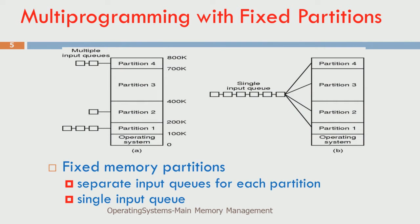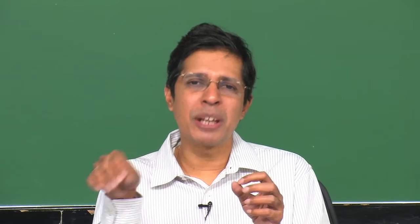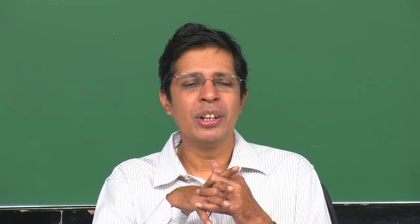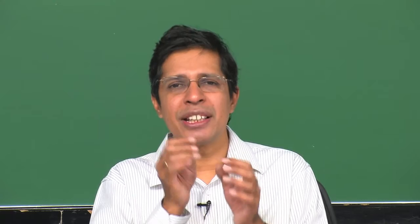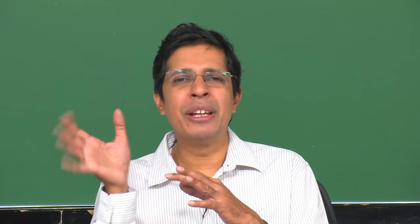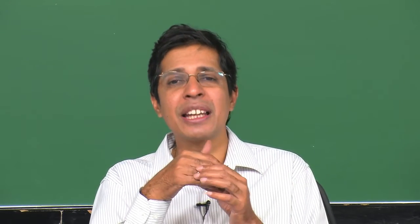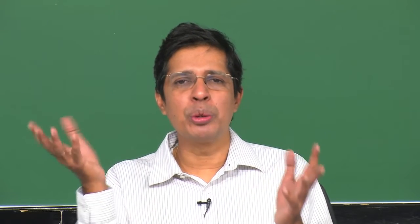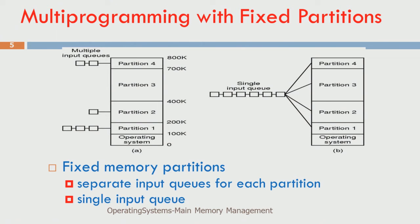In a multi-programmed system, more than one process is ready to execute at any time. On a mail server with one CPU, the OS gives each user process some CPU time in a round-robin fashion. One way the OS allocates memory is through fixed memory partitions. For example, there could be 3 input queues — one allocated to partition 4, another to partition 2, another to partition 1.